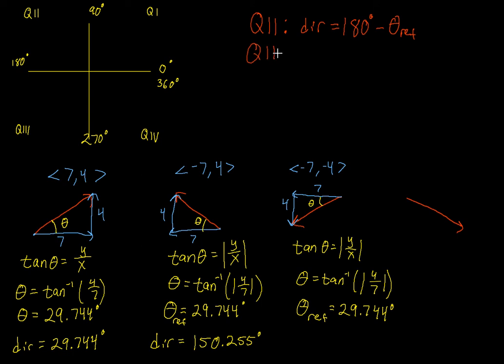So what's different for quadrant 3? For quadrant 3, let's move our vector over so we can see it in action. For quadrant 3, we're going to be a little bit bigger than 180. So in order to figure out this direction, we're going to take that 180 degrees. And instead of subtracting the reference angle, we want to be bigger than 180. So we're going to add the reference angle. So for our quadrant 3 angle, our final direction is going to be 180 plus 29.744 degrees. We're going to end up with 209.744 degrees.